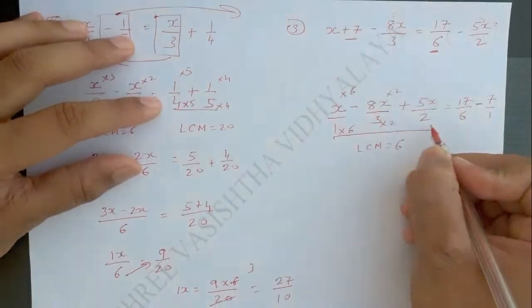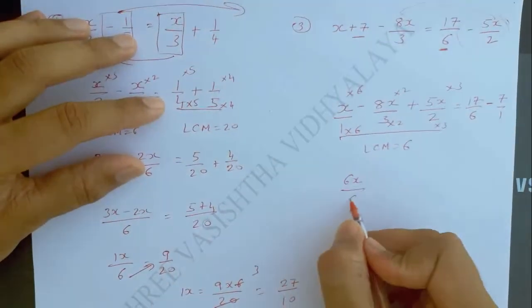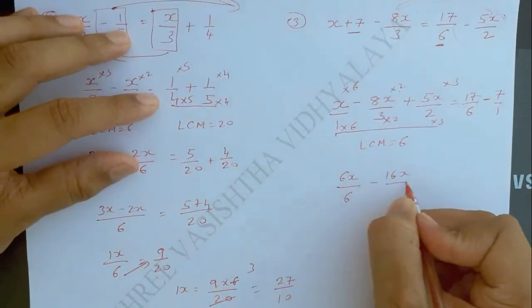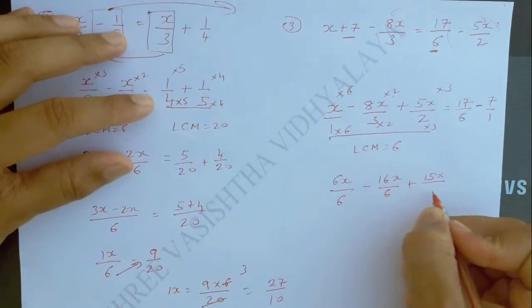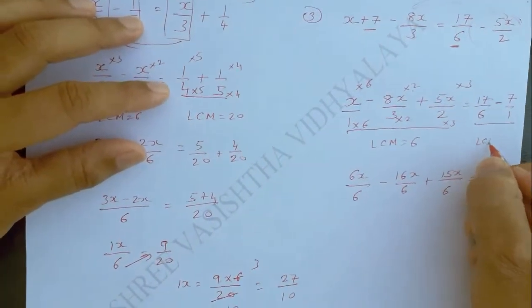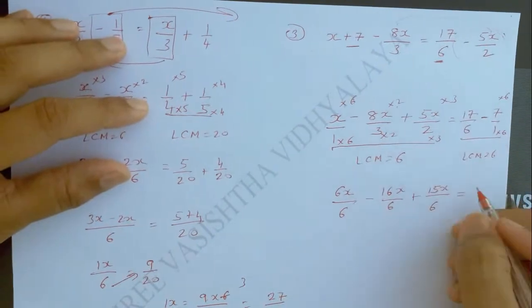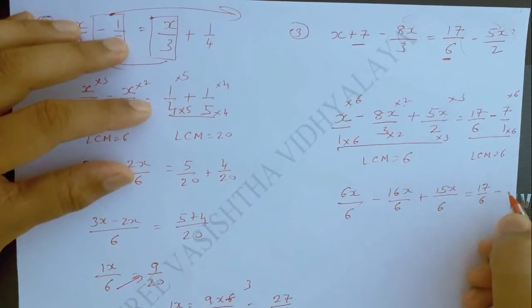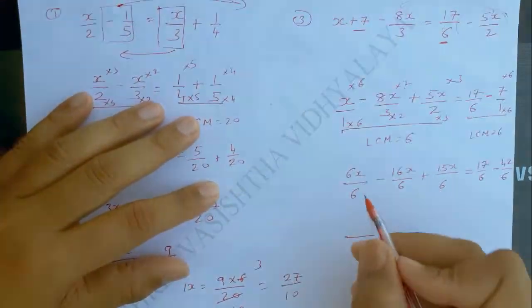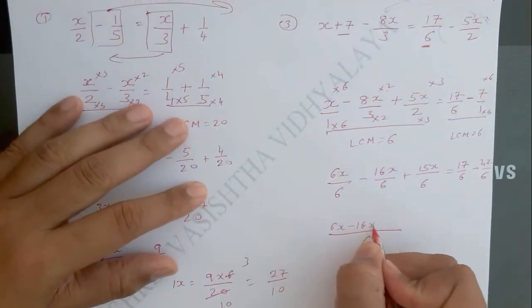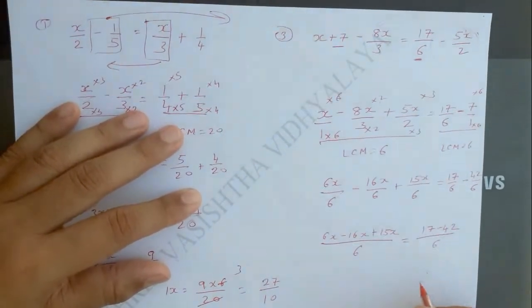This 3 by 2, this 2 by 3. So 6 into x will be 6x upon 6, 8 into 2 will be 16x upon 6, and 5 into 3 will be 15x upon 6. On the RHS, 6 and 1 LCM will be 6, so we will multiply this 1 by 6. So 17 upon 6 minus 7 times 6 is equal to 42 upon 6. Now since both denominators are the same, we write it only one time. So 6x minus 16x plus 15x upon 6 is equal to 17 minus 42 upon 6.